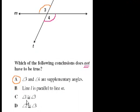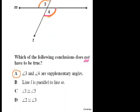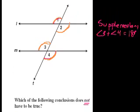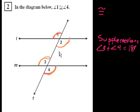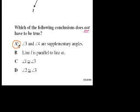Answer C: angle 1 is congruent to angle 3. If angle 1 is congruent to angle 4, and angle 3 is congruent to angle 4 because they're opposite angles, then angle 3 is also congruent to angle 1. Answer D: angle 2 is congruent to angle 3. By the same logic, since 1 and 2 are opposites they're equal, and 4 and 3 are opposites so they're equal, all of these angles are the same — so 2 and 3 are also congruent. All of B, C, and D must be true, so A is definitely our answer.